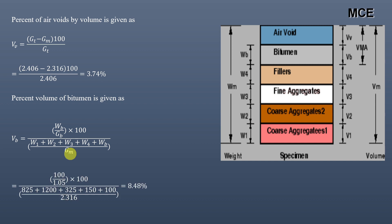Putting values for different variables, Wb equals 100 divided by 1.05 into 100 divided by 825 plus 1200 plus 325 plus 150 plus 100 divided by 2.316, which comes out to be 8.48%. This is the percent volume of the bitumen in the mix.